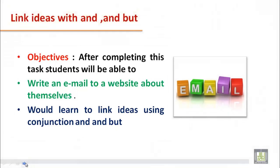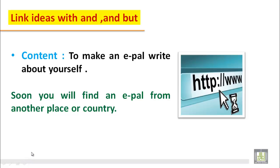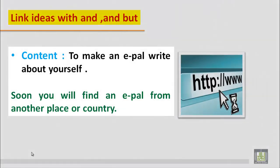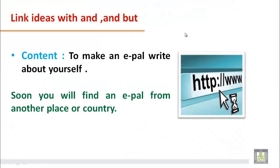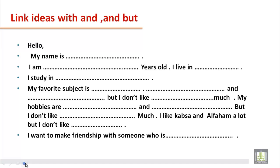As we discussed in the last unit, if you have to write an email about yourself or about your classmate, you should have some ideas ready: the name of the person, their age, what they do, where they live, their hobbies, what they like, and what they don't like. If you have these ideas, you can very easily write an email to a friend or to a website.